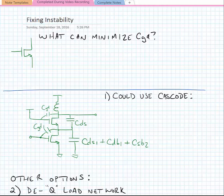Okay, so today we're going to talk about fixing the instability problem that we saw that arose from the gate-to-drain capacitance in a MOS device.